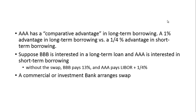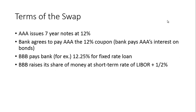Suppose BBB is interested in a long-term loan and AAA is interested in short-term borrowing. Without the swap, BBB pays 13% and AAA pays LIBOR plus a quarter percent. We're going to bring in a commercial or investment bank to arrange the swap. Here are the terms: AAA issues seven-year notes at 12%, based on that $10 million of notional principle, which is never going to be exchanged.